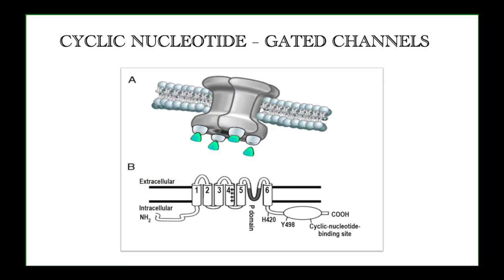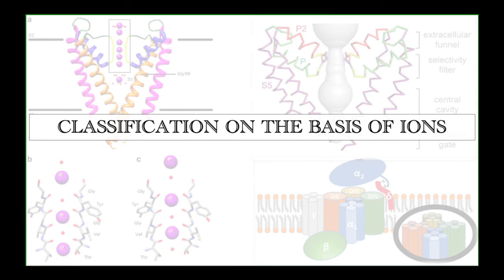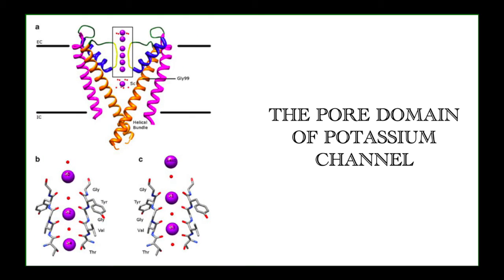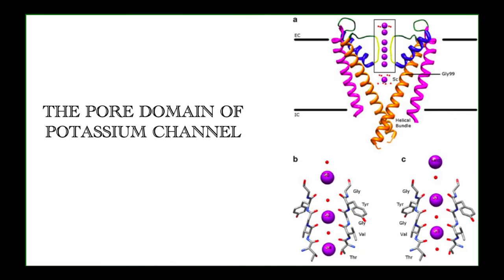Classification on the basis of ions: ion channels can also be classified by the ions they allow. Considering the potassium channel KCSa — it has a specific outer and inner core oriented in a V-shape. When activated, the core becomes parallel, allowing linear flow of potassium ions between S2 and S4 subunits.